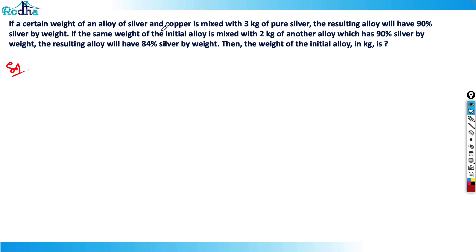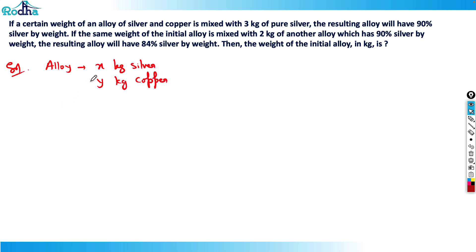I'll assume variables. The initial alloy contains x kg of silver and y kg of copper. Now this alloy is mixed with 3 kg of pure silver. After mixing, the copper content remains y kg, and the silver content increases by 3 kg.